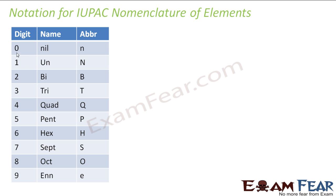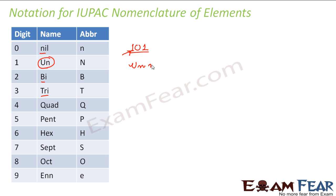The convention is: if the digit is 0, we use the word 'nil'; if it is 1, we use 'un'; if it is 2, we use 'bi'; for 3, we use 'tri'. For example, if the element has atomic number 101: 1 is 'un', 0 is 'nil', and 1 is 'un' again — then we append 'ium'. So the temporary IUPAC name for atomic number 101 would be 'unnilunium'.